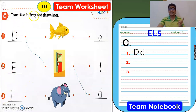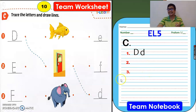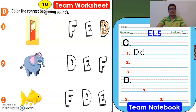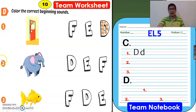For the notebook, please write only the correct letter. Still on page 10, team worksheet, Activity D: color the correct beginning sounds. We have three questions: one, two, and three. For the notebook, please write letter D, numbers one, two, and three.